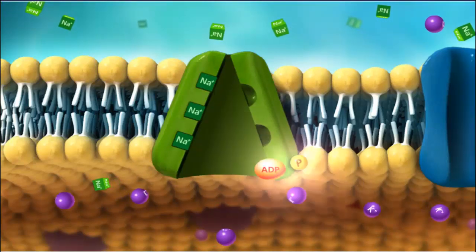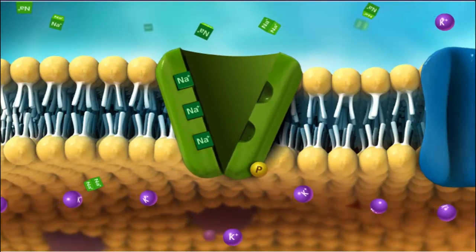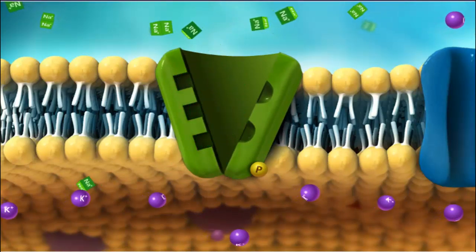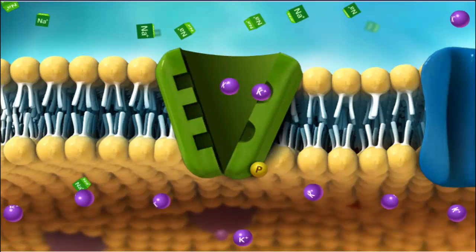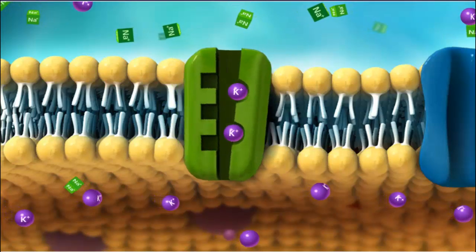ATP fuels the pump in the movement of these ions from low to high concentrations, moving sodium ions outside of the cell where they become concentrated and bringing potassium ions into the cell where their concentration is higher relative to the outside.